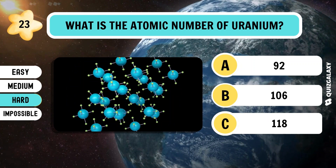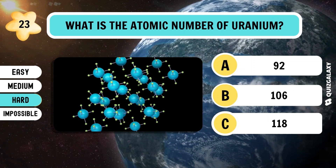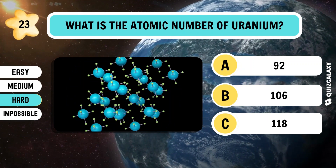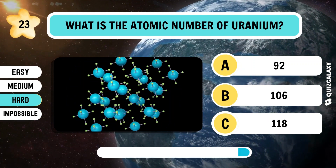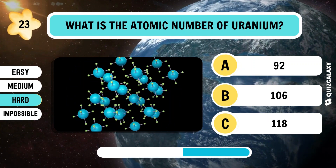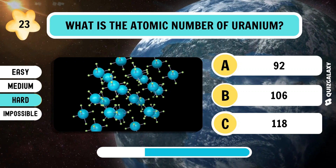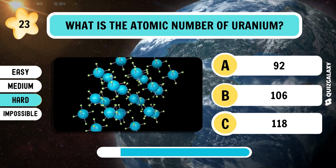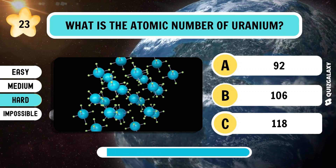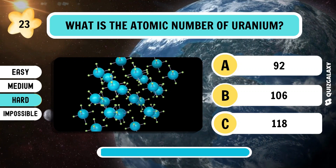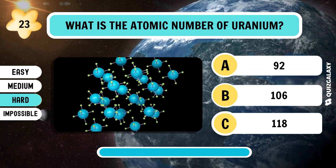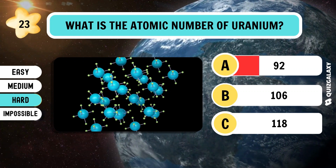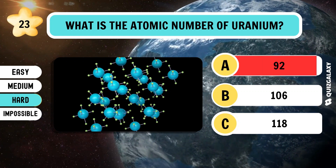What is the atomic number of uranium? 92.